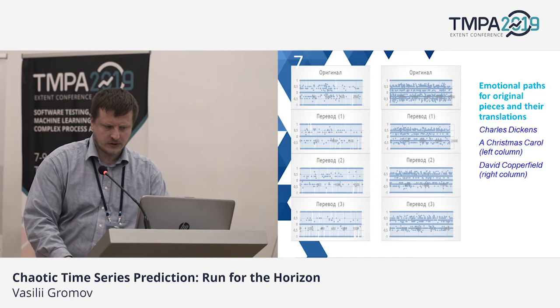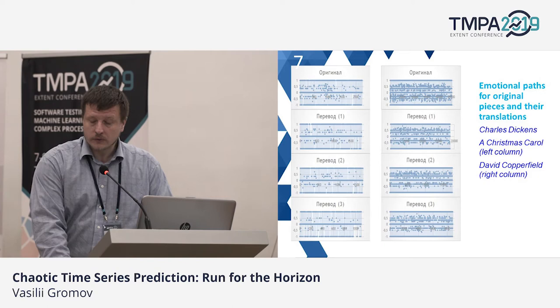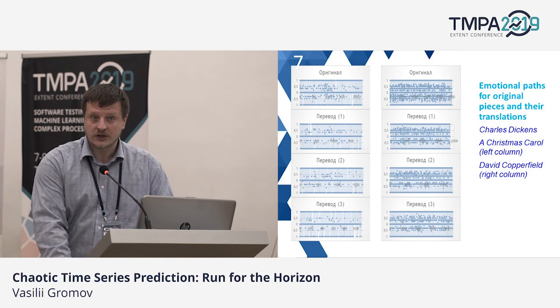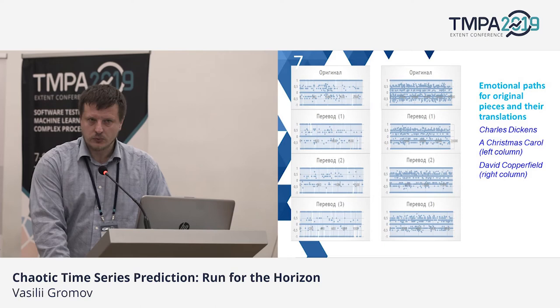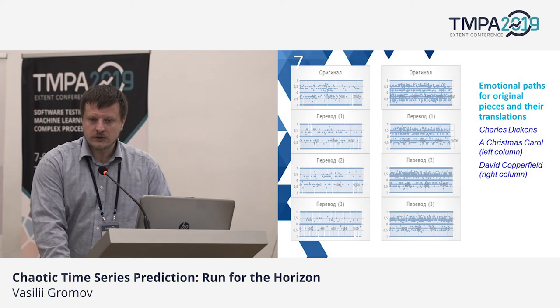It's the emotional path for two novels by Charles Dickens — the original masterpieces and their translations into Russian language. Why do I consider this so important? Because maybe one of the most interesting applications of this theory to real-world practice is a means to estimate — to assess somehow — the quality of translation.